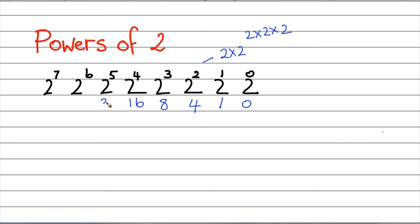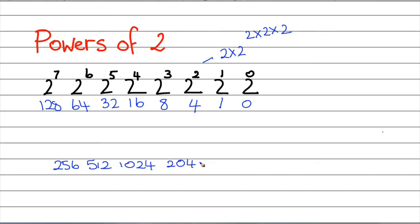So continuing to double: 16, 32, 64, 128, 256, 512, 1024, 2048, 4096. You keep going with that doubling pattern.